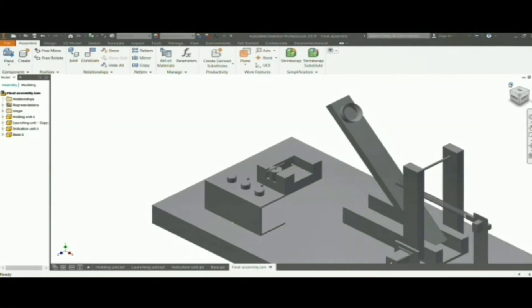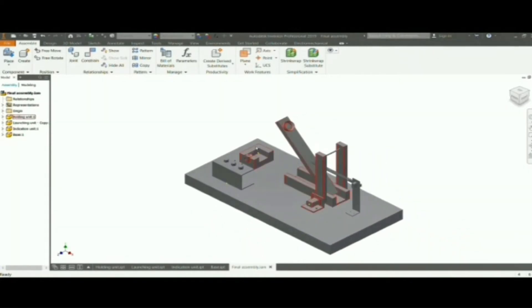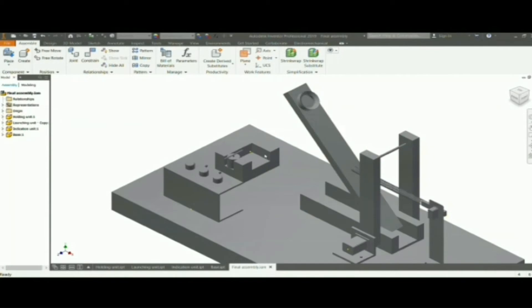The holding unit and launching unit are connected through material interaction by spring. Holding unit and indication unit are connected through data and spatial interaction. The launching unit and indication unit are connected through data and spatial interaction. All three subunits are connected to the base through material interaction.